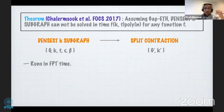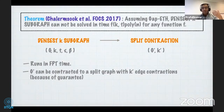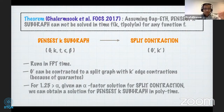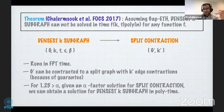This reduction should run in FPT time, and G' can be contracted to a split graph with k' edge contractions. We can prove that for alpha smaller than 1.25, given an alpha-factor solution for split contraction we can obtain a solution for densest k-subgraph in polynomial time. With this setting we can refute the existence of an alpha lossy kernel for smaller values of alpha, because such an algorithm cannot exist under Gap-ETH.